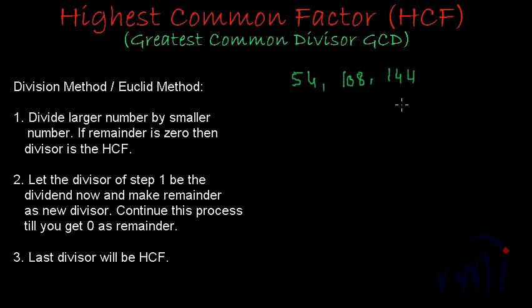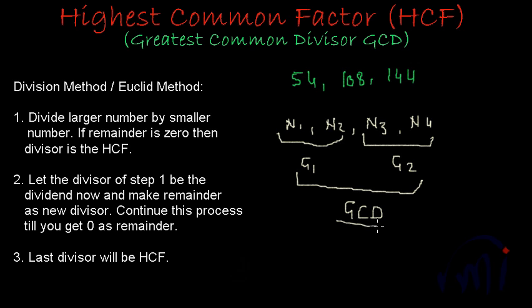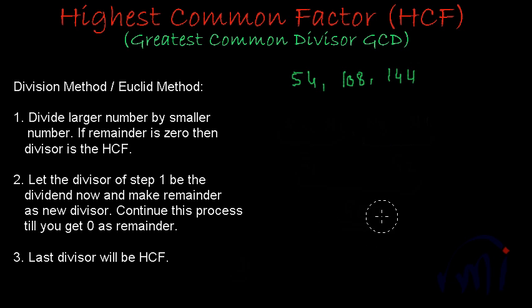And if you have more than three numbers also then also you can follow this procedure. Suppose if you have number one, number two, number three and number four. You can find the GCD of these two numbers. Let's call that G1 and you can find the GCD of the last two numbers and call them as G2. And then you can find the GCD of these two numbers and that will be the GCD of all these four numbers. So you can find the GCD in any order. It completely depends on you.